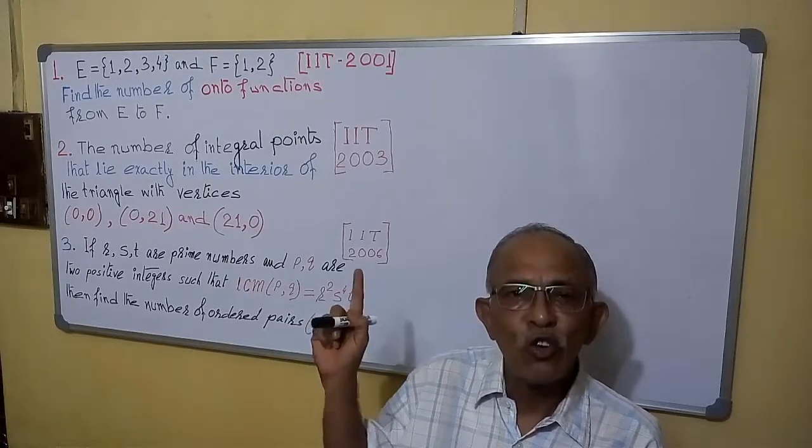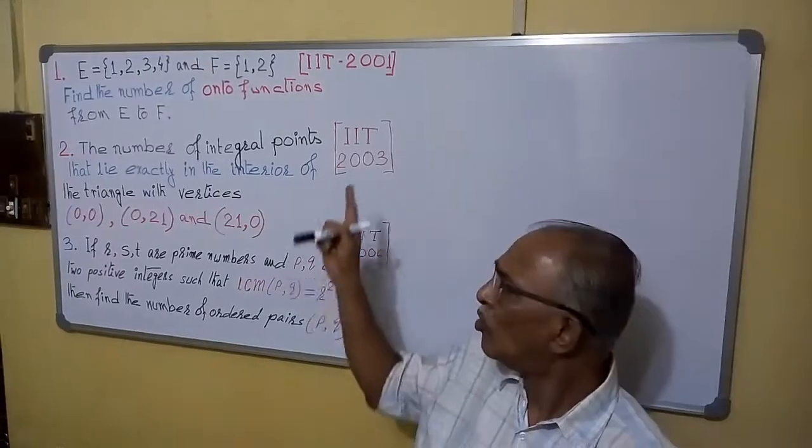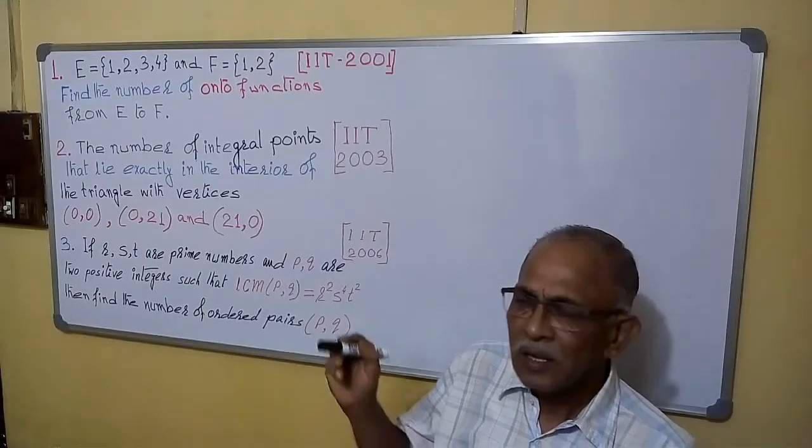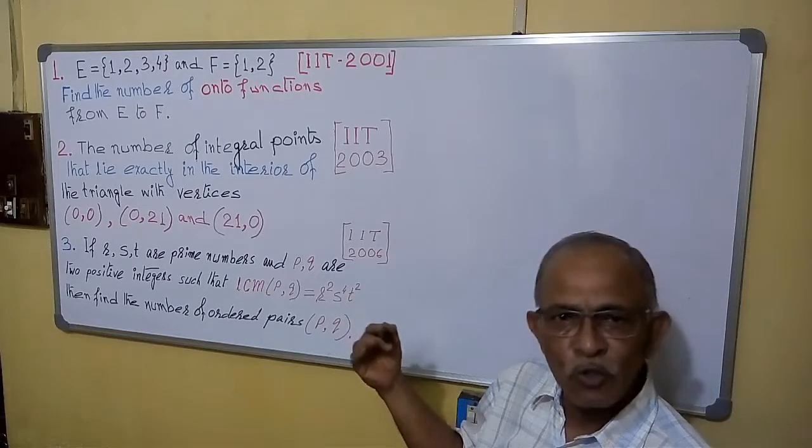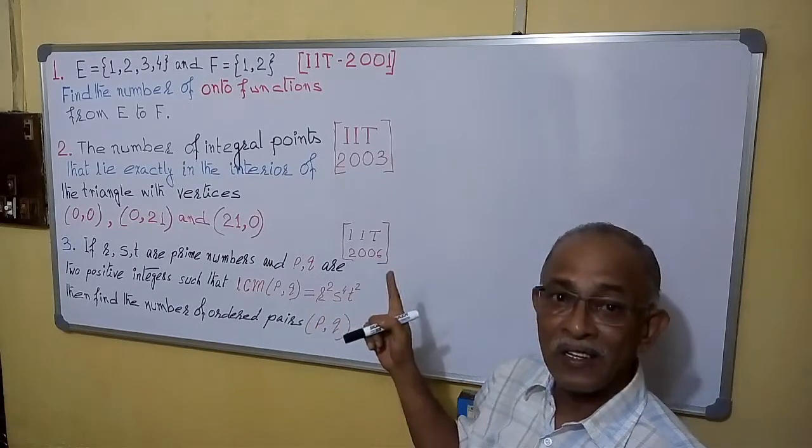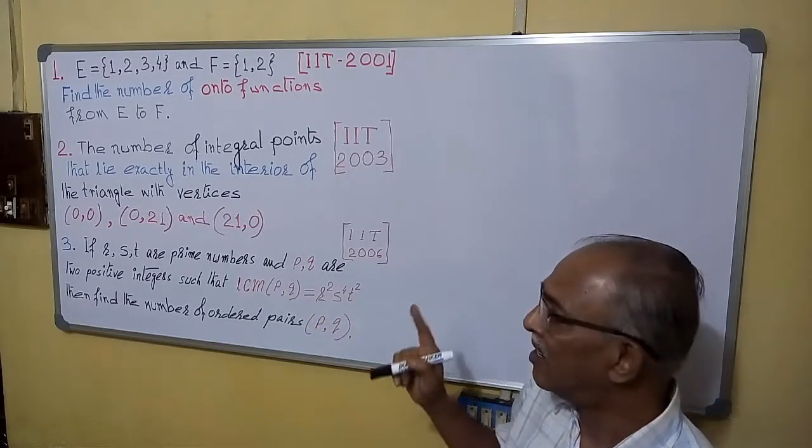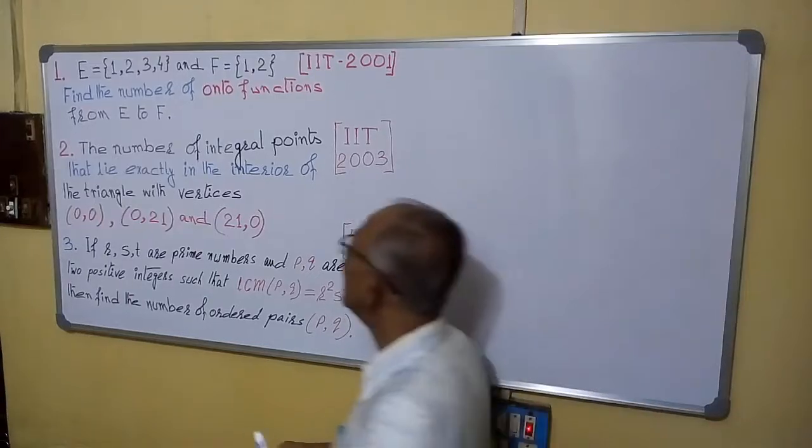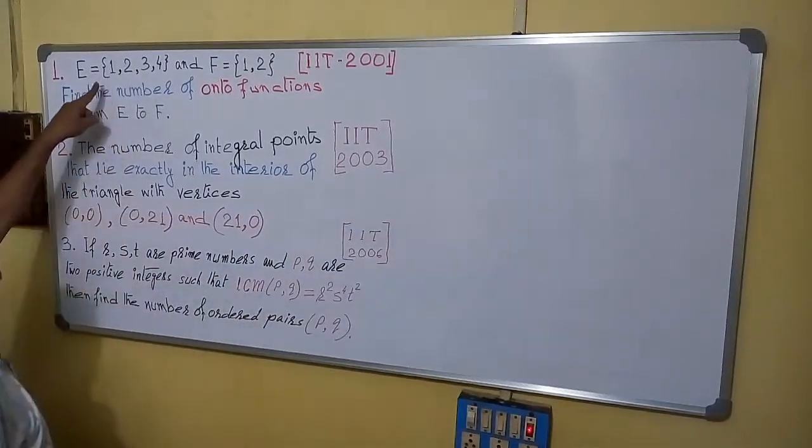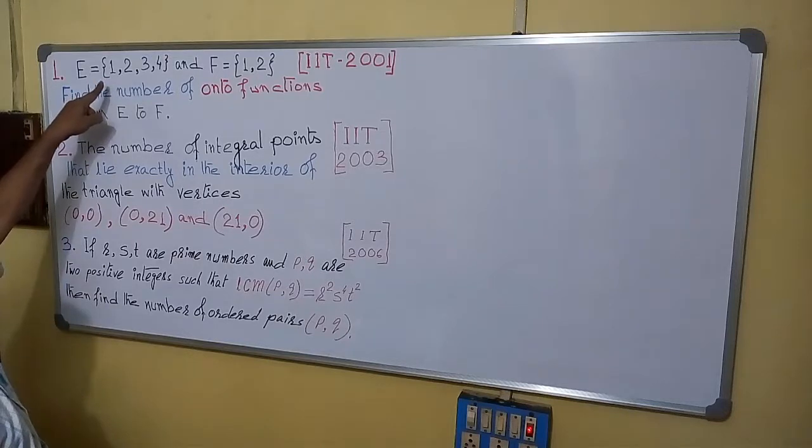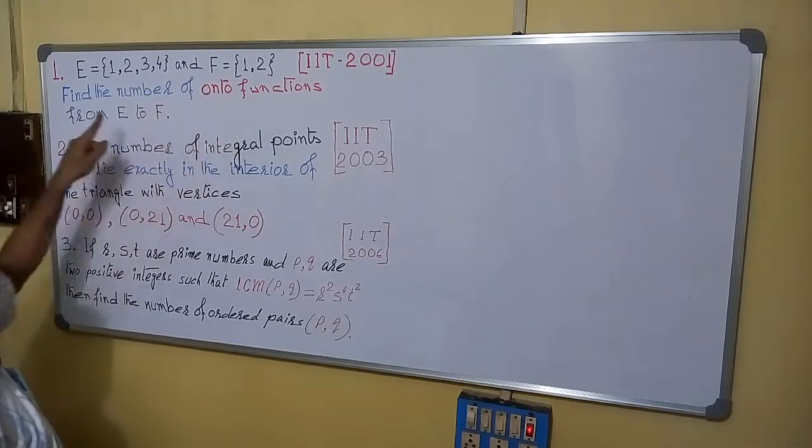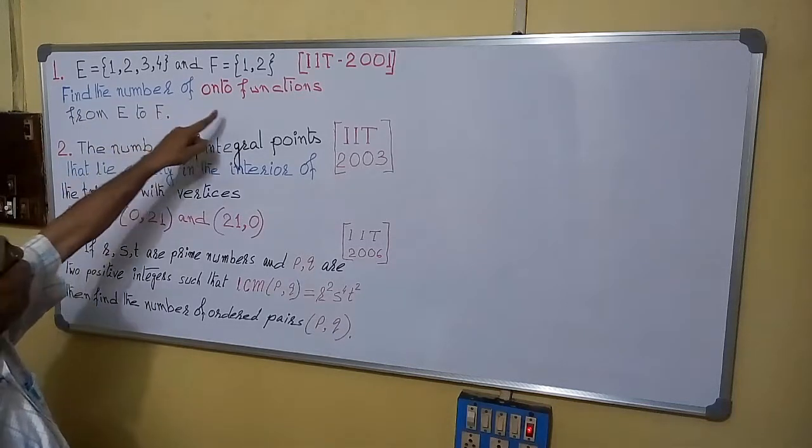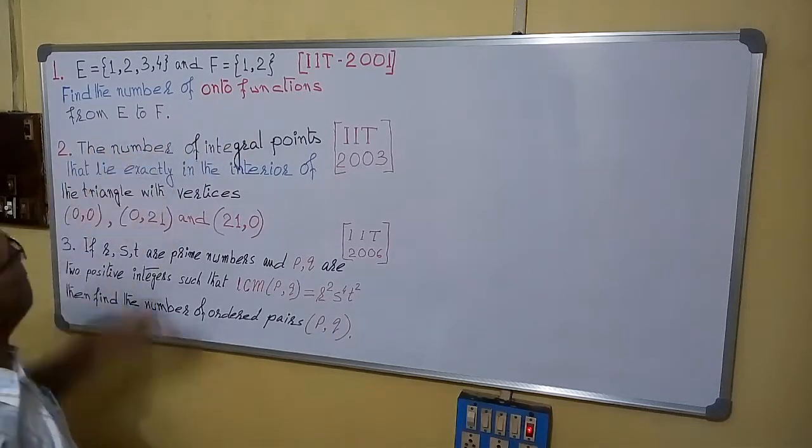Welcome. I will show you a few sums of IIT. What we have to remember is that we have to do these sums quickly, but it should be correct. See how to proceed. Let us agree the first one. E is a set of 1, 2, 3, 4 and F is 1, 2. Find the number of onto functions from E to F.